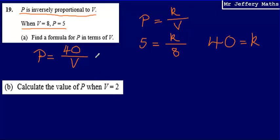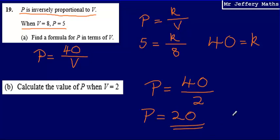Well, now this is a very simple question because we've got a formula to calculate P when we know what V is. So we're just going to use this formula that we found in part A. So P will be equal to 40 divided by 2, divided by V, and that means that P will be equal to 20. And that's our final answer.